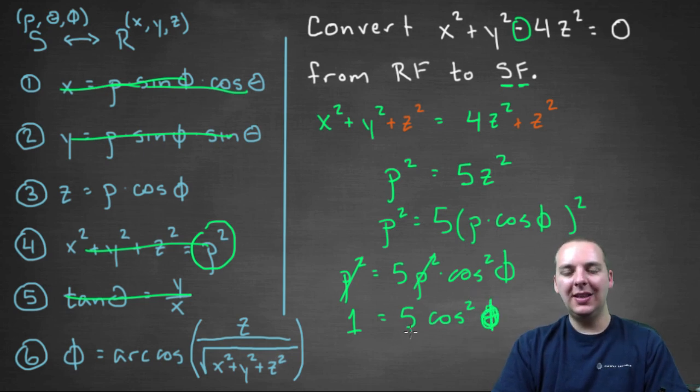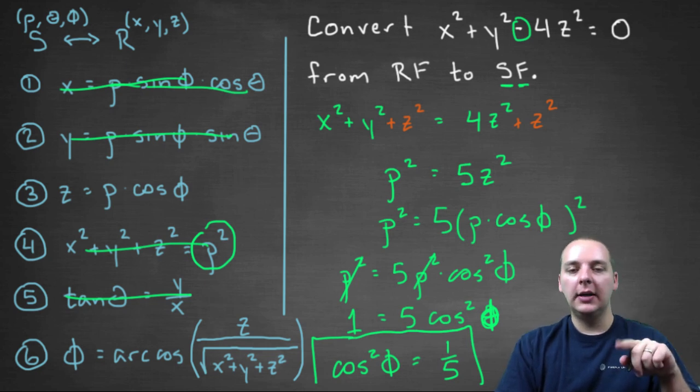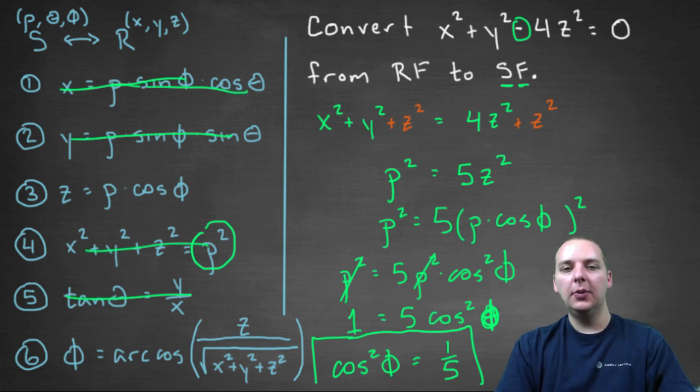And so if you clean that up about as clean as you would want to make it, you would say either cos² φ = 1/5, which is probably the way we'll leave it. Or you could say cos φ = ±√(1/5). But that with the radical, I don't think I really want to introduce that. So I think this is sufficient right here.